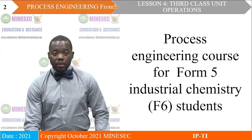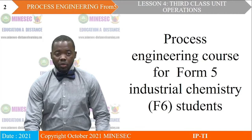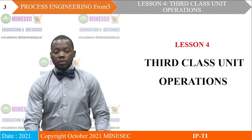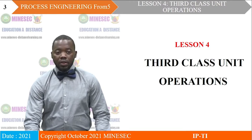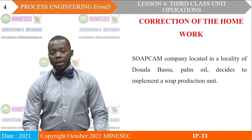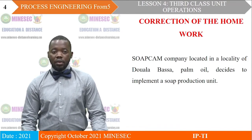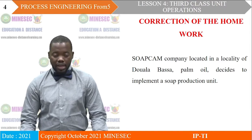We are going to continue in the Process Engineering course for five industrial chemistries today. We are going to study the fourth lesson entitled Third Class Unit Operations. Before we enter into the details of this lesson, let's correct the assignment we did during the previous lesson.